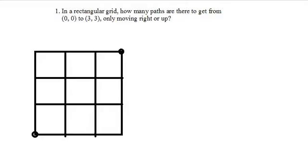So, today we're talking about counting using bijections, and this is the first problem we're going to do. In a rectangular grid, how many paths are there to get from (0,0) right here, to (3,3), only moving right or up?